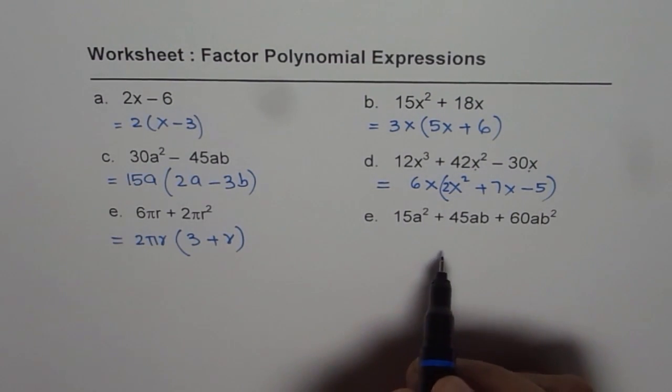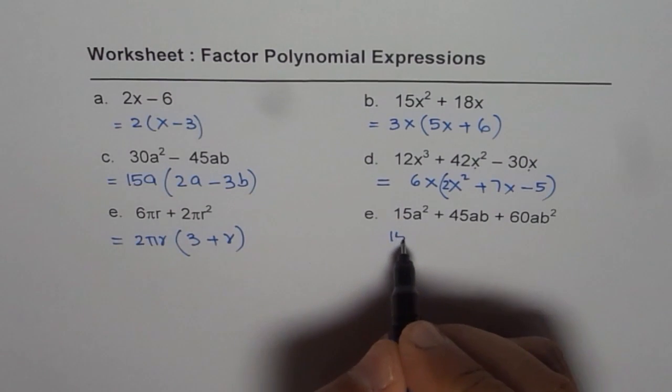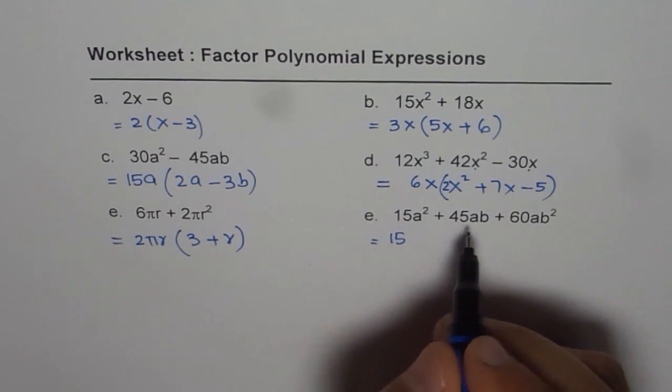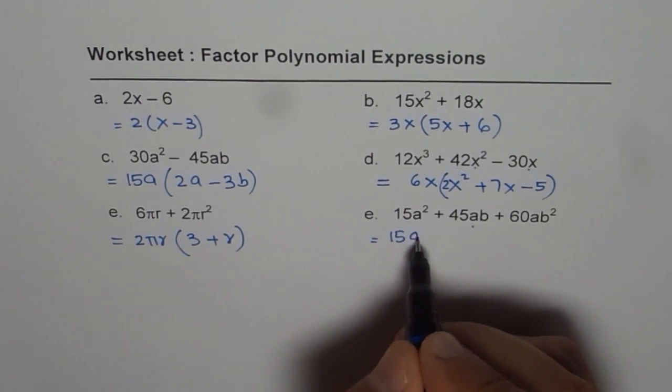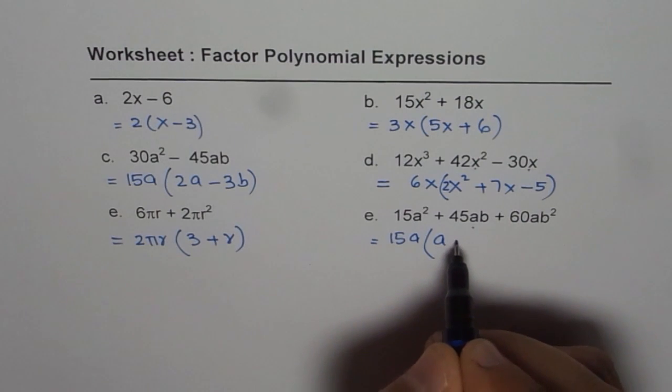Now we have a trinomial which seems to have 15 as a common factor. We will take 15 outside. Amongst the variables, a is a common factor. 15 times 1 leaves us with a here.